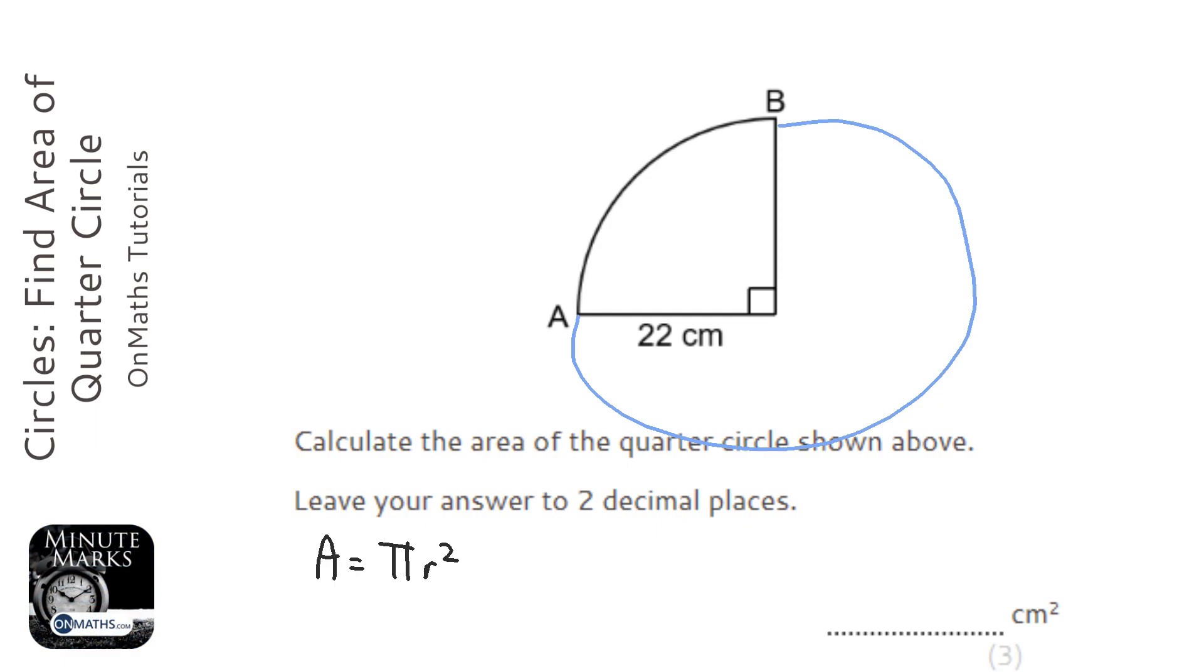Now if you have a look, that length there, the 22 centimeters, is going to be the radius of a full circle if I drew the circle properly. So we know what the radius is, and all we do is we times it by the fraction of the circle we have, which is going to be a quarter.